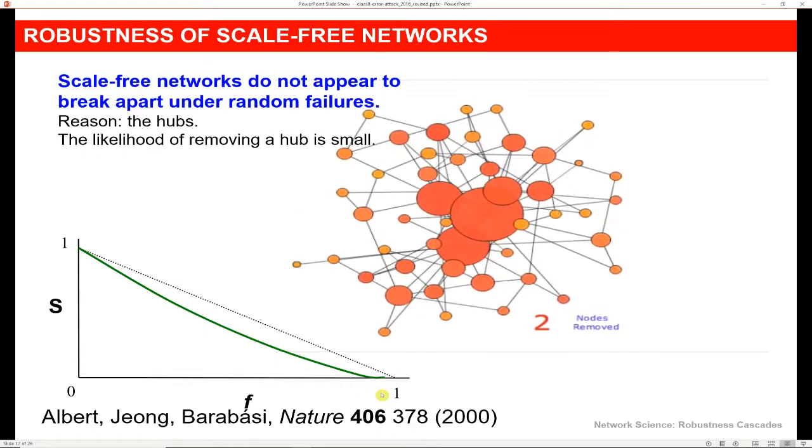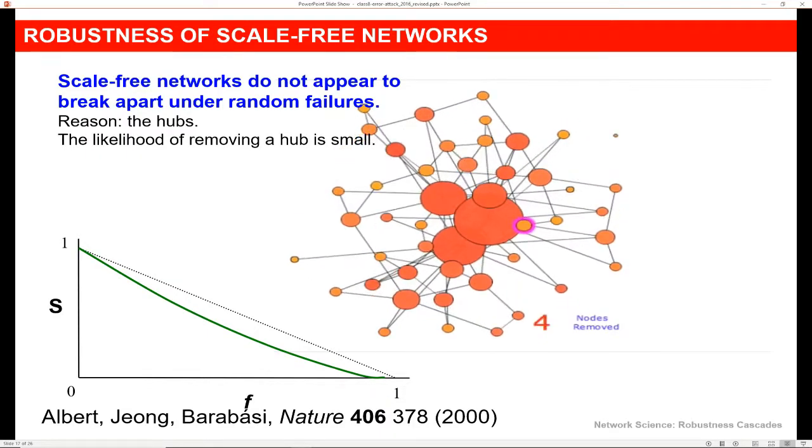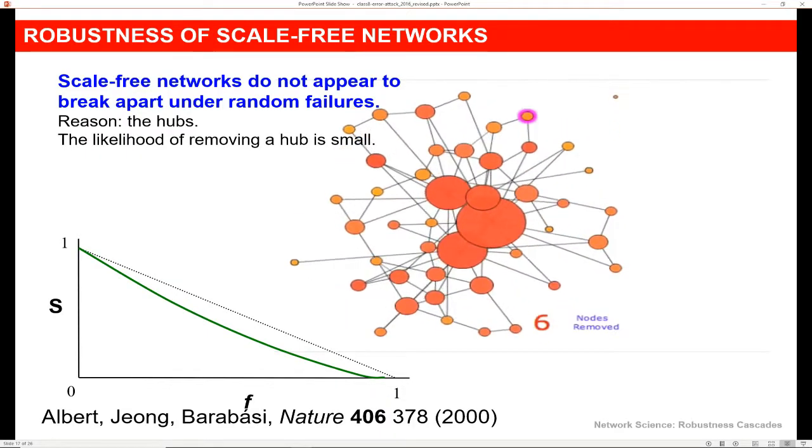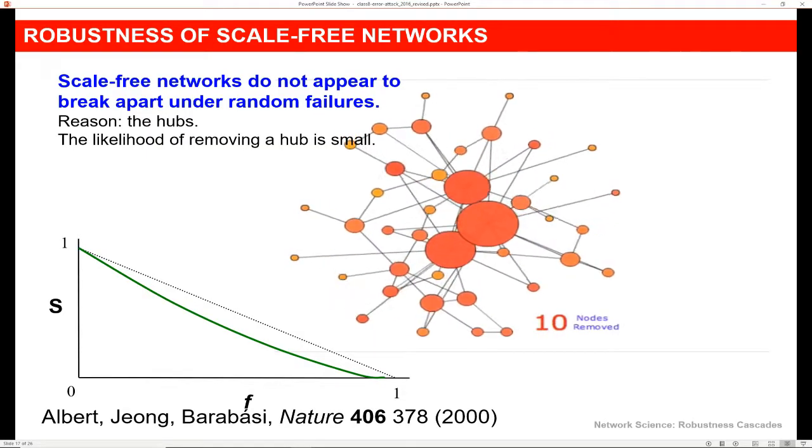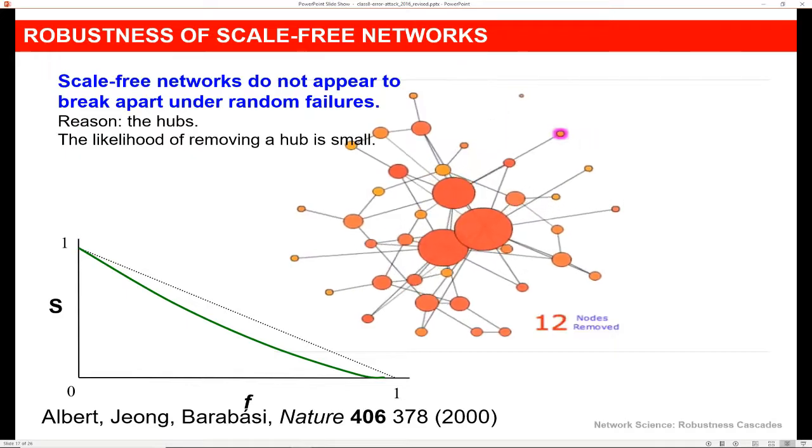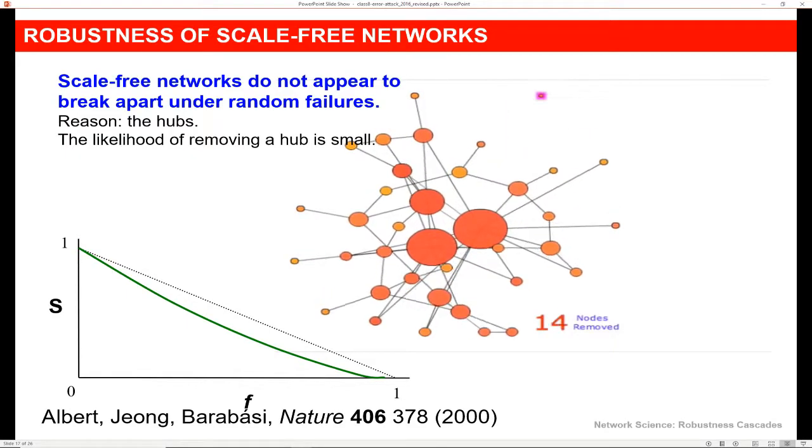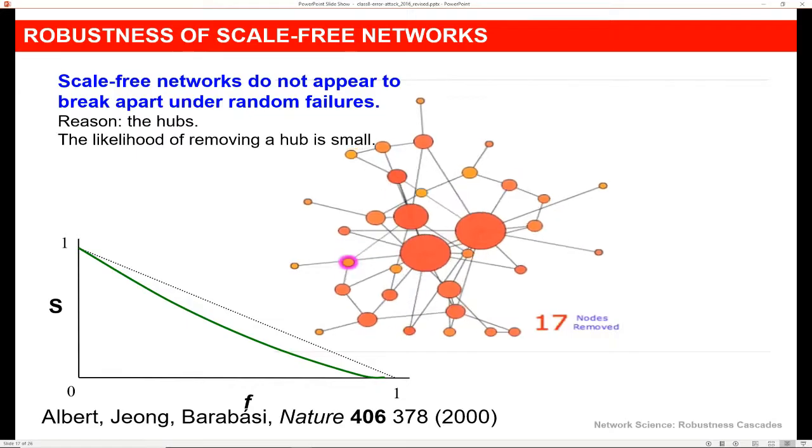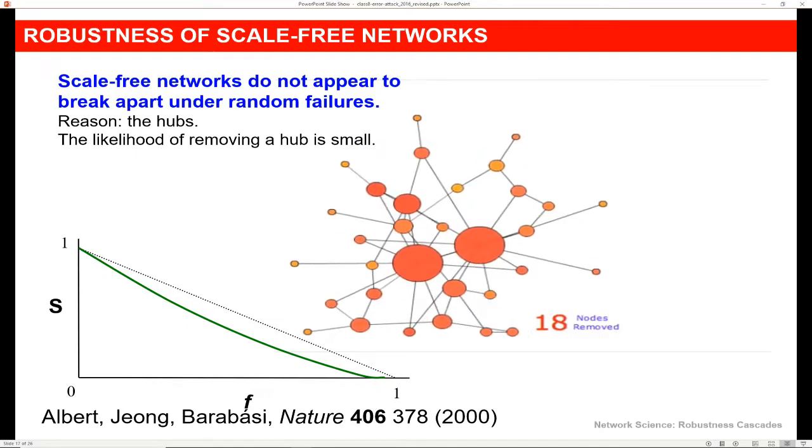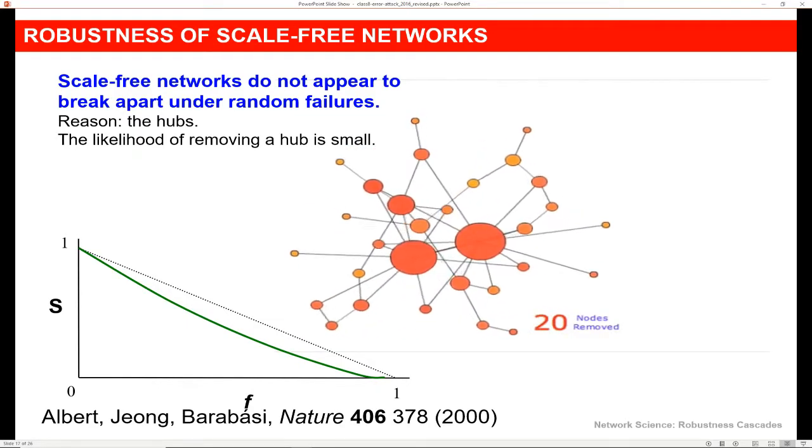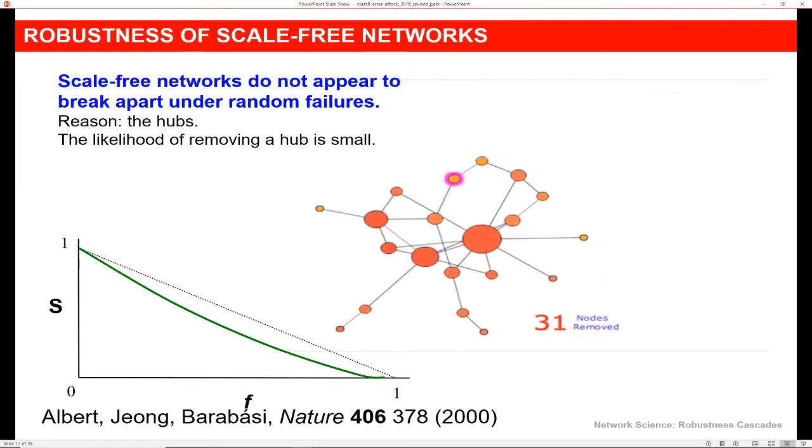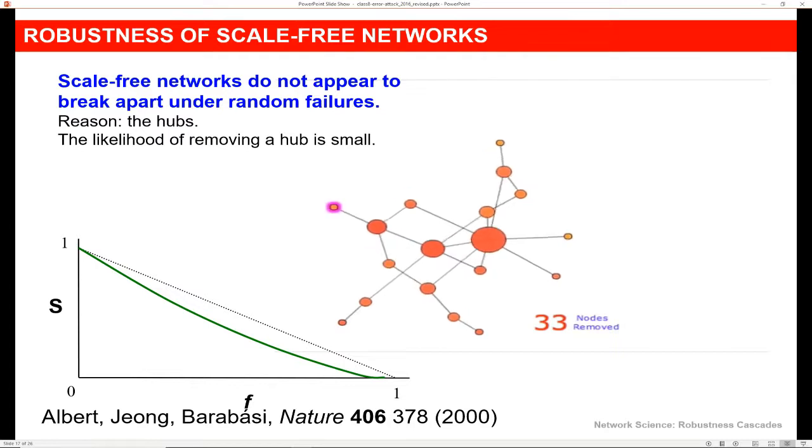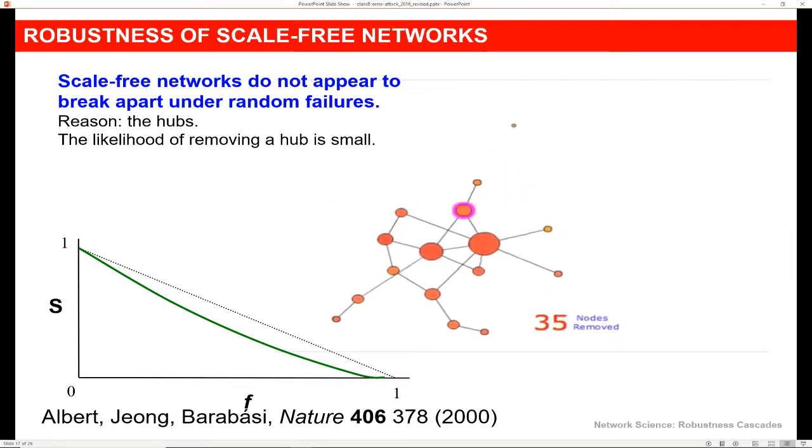And so again, we have this result that if we just have random failures, that a scale-free network is actually very strong. And we see this, and you've probably seen this in real world networks that are scale-free. Just having a couple of random failures, or even a lot of random failures, is not going to shut the entire network down. And that's related to it having a giant component, as well as the likelihood of removing a hub from the network is very small.